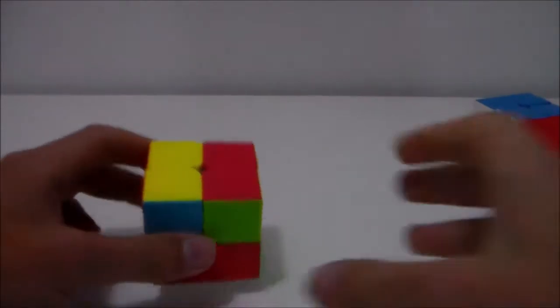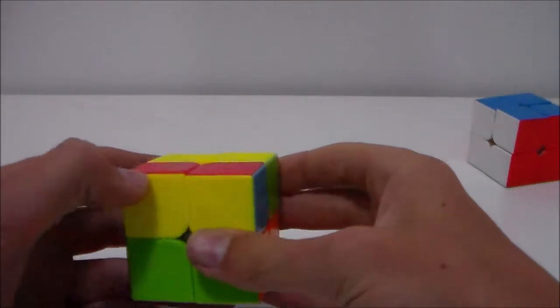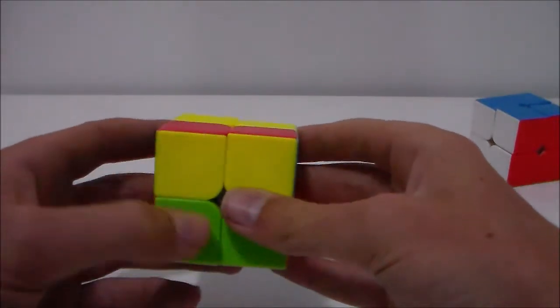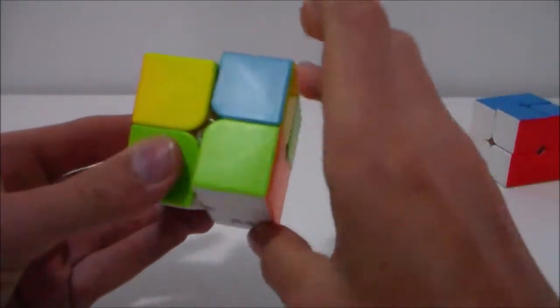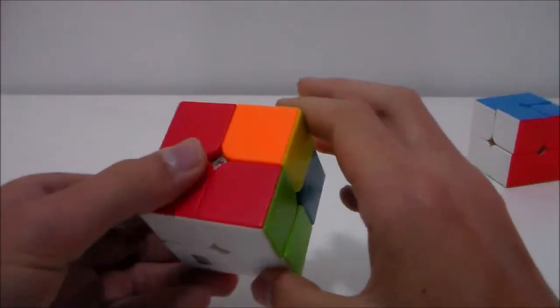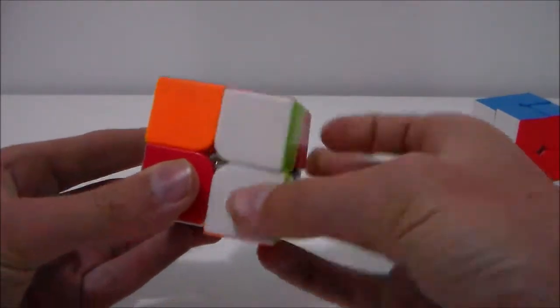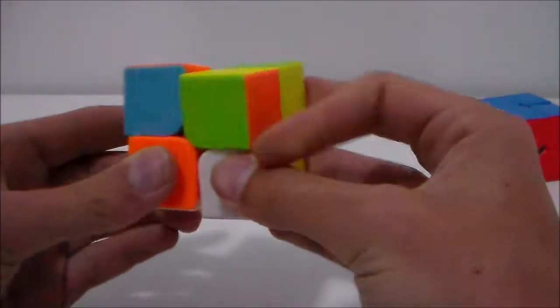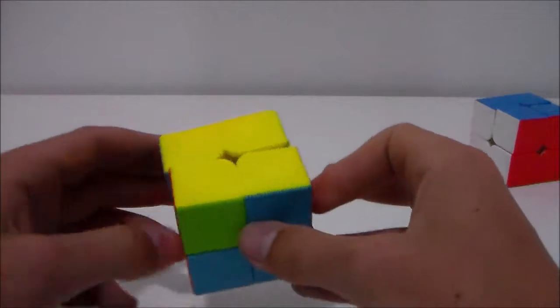The second case is when there are only two on the top. So what you will want to do is try to find one that is on the left side that is on the side. So you will want to perform the Sune algorithm and then you will be left with the one on the top. You will then perform the Sune algorithm R U R prime, U R U2 R prime, and then you will do this once or twice. Most likely it will be twice and there you go, there's your yellow layer oriented.